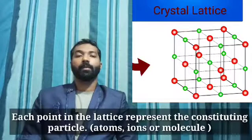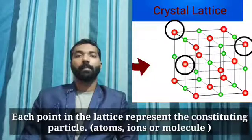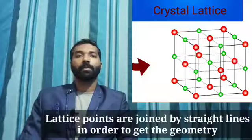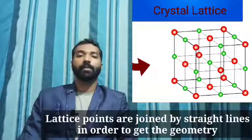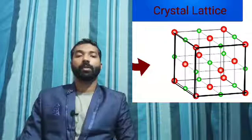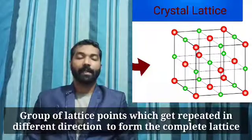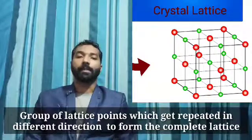In the crystal lattice, each point is known as a lattice point. Lattice points are joined by straight lines in order to get the geometry of the solid. The group of lattice points are repeated in different directions to form the complete crystal — that is why we call it the crystal lattice.